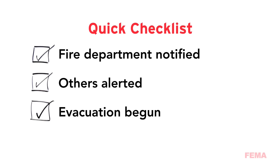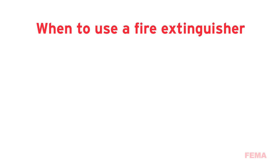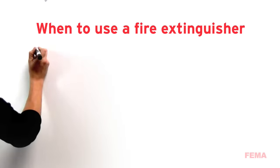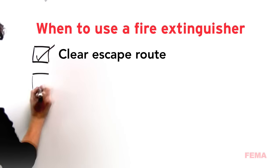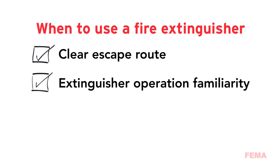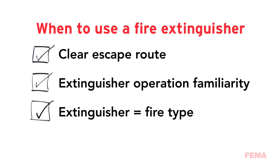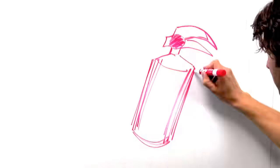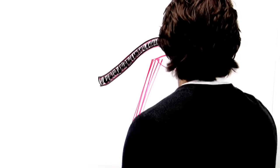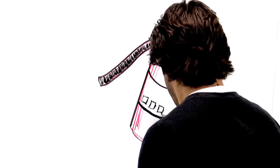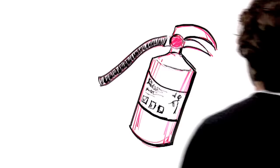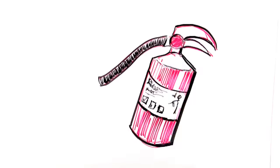Fire extinguishers are for controlling small fires before they have a chance to spread. Before using one, make sure that you have a clear escape, you are familiar with the operating instructions of the fire extinguisher, and that the fire extinguisher you have is suitable for the fire you're facing. Look at the fire class symbols on the front label to make sure the extinguisher is suitable for the type of fire you're facing.